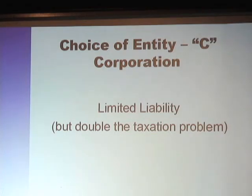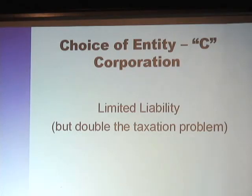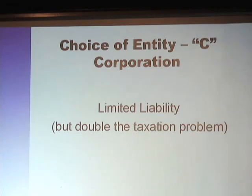One way of dealing with liability is the C corporation. You get limited liability — it's wonderful. It's really hard to pierce the corporate veil as long as you're not fraudulently setting up the corporation to be your alter ego. You have limited liability, though you do have some formalities.